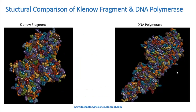You can compare the structures here: there is a large subunit, and the lower part of DNA polymerase is removed. What we obtain after the cleavage is the Klenow Fragment. DNA polymerase is the full-length product and the Klenow Fragment is the cleaved product. On the left side, you can see the Klenow Fragment as the cleaved product, and DNA polymerase is the full product having three domains.